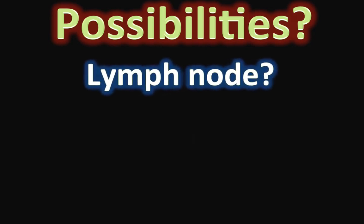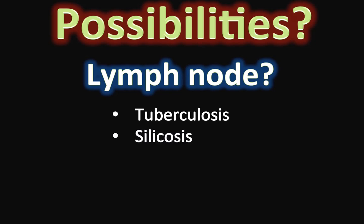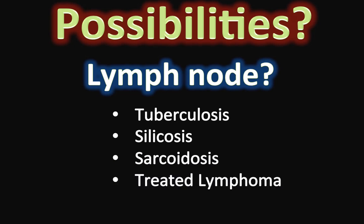Eggshell calcifications have been classically described with calcified lymph nodes. Calcified lymph nodes may have various appearances. Eggshell calcification is not the commonest, but it has a peculiar differential diagnosis. It may be due to an infection such as tuberculosis, histoplasmosis, or other fungal infections. It could be a result of occupational lung disease such as silicosis, a granulomatous condition such as sarcoidosis, or it could be seen in treated lymphoma.